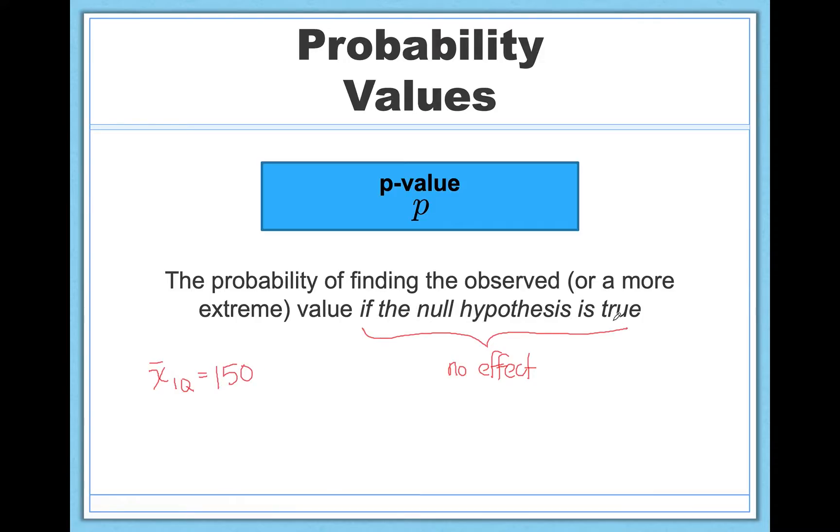Well, if the null is true and neuro IQ is actually entirely useless, think about how tiny the probability of finding this observed value is, if there's no effect. It would be really rare to just randomly pick 15 people from the United States, for example, and have those 15 people have an average IQ of 150 taken together. That's really weird, that's really unlikely. And so as a result, we're going to get a tiny probability value of this happening.